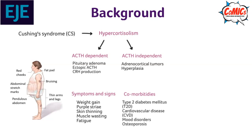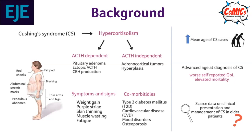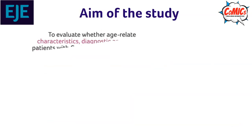CS is also related to comorbidities such as diabetes and cardiovascular disease. As life expectancy has increased and the general population is growing older, the mean age of CS cases has also increased. Older age at diagnosis is associated with worse self-reported quality of life and elevated mortality. Despite this, data on diagnosis and management of CS in older patients is scarce.